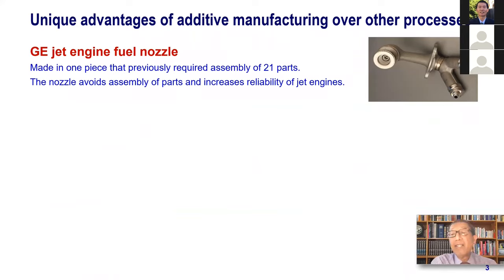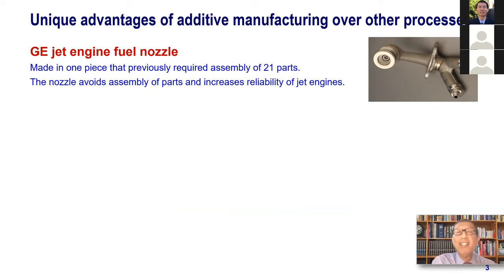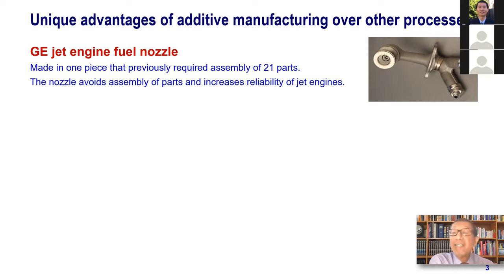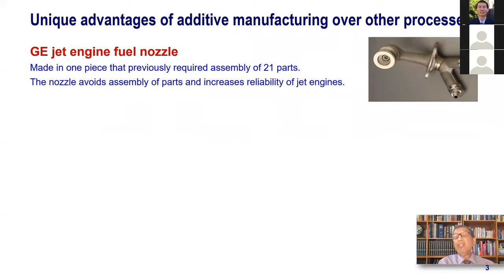There are certain things that additive manufacturing can do that other manufacturing cannot. This GE jet engine fuel nozzle is one example. The picture on the right used to be made out of 21 separate parts. Now GE has set up a plant in Alabama, and they manufacture it by the powder bed fusion process in one step. GE believes this makes their jet engines much more reliable.